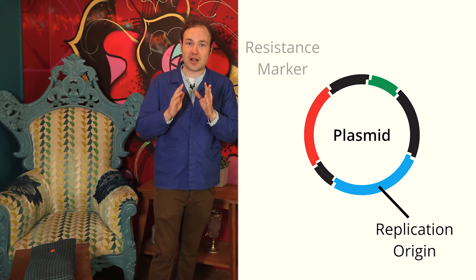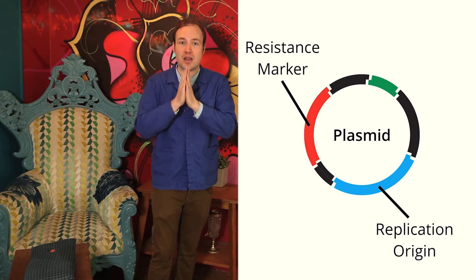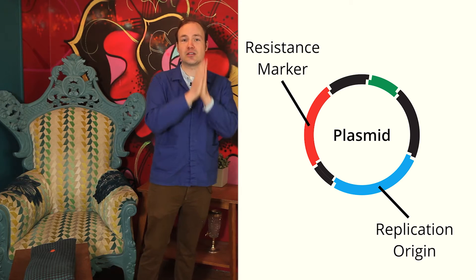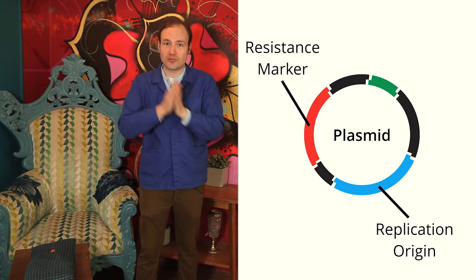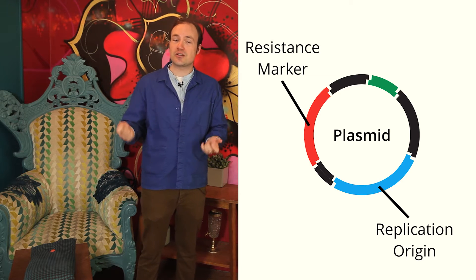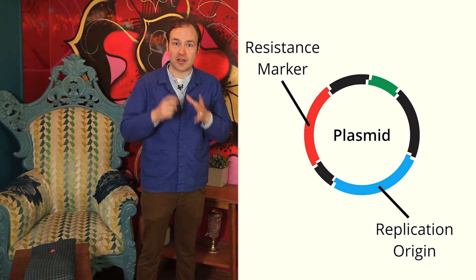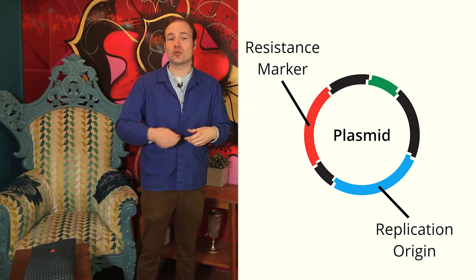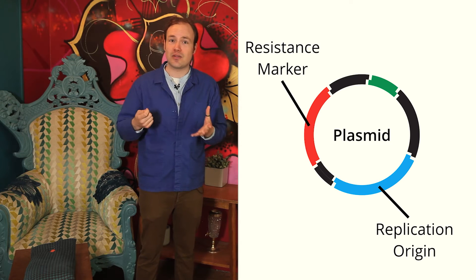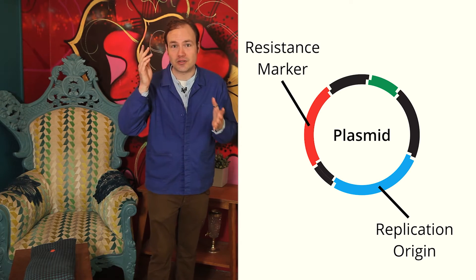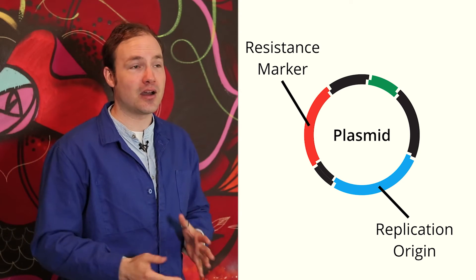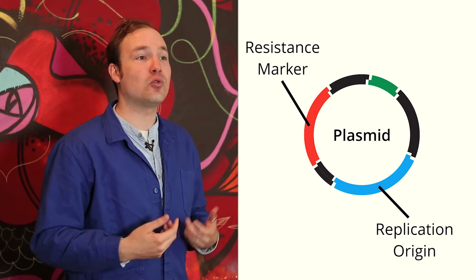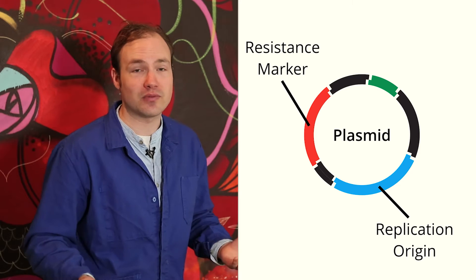Second, the antibiotic resistance marker. Antibiotic resistance gives us a way to separate cells that carry the plasmid from those that don't. Resistance to many antibiotics can be conveyed by a single gene. The gene codes for an enzyme that inactivates the antibiotic or pumps it out of the cell. So, if we add the antibiotic to a culture of cells, we know that only cells carrying our plasmid will survive and grow.